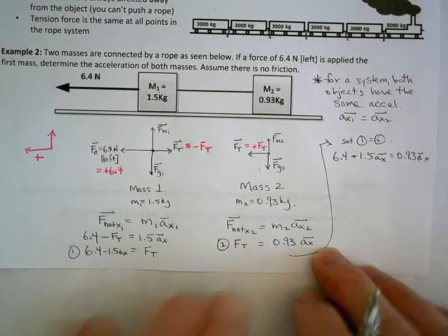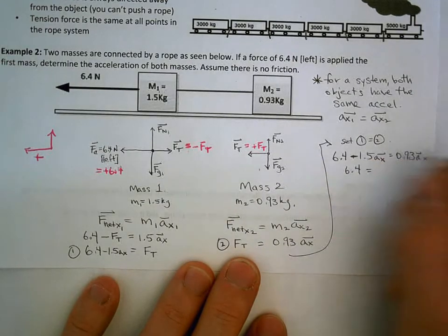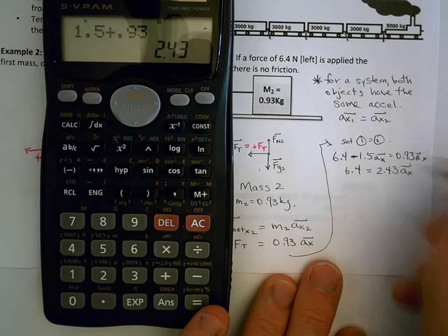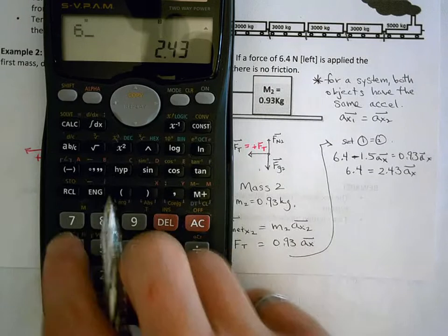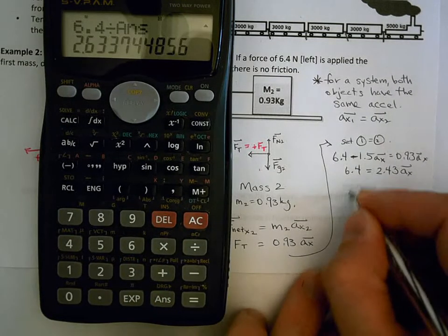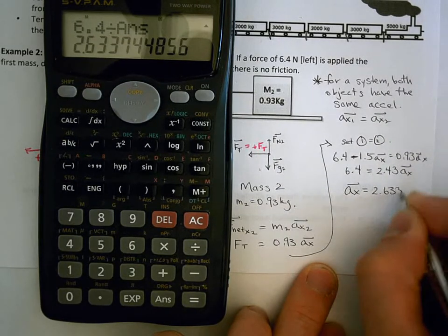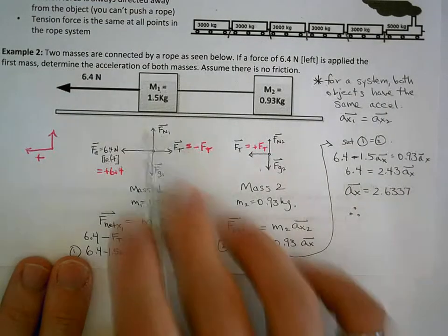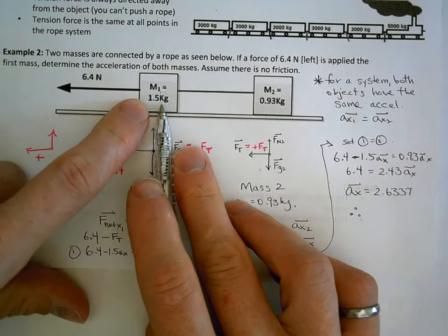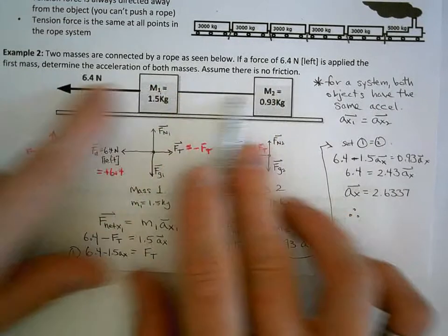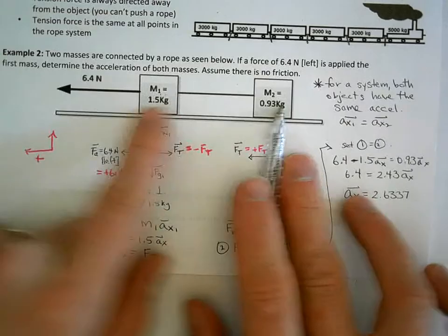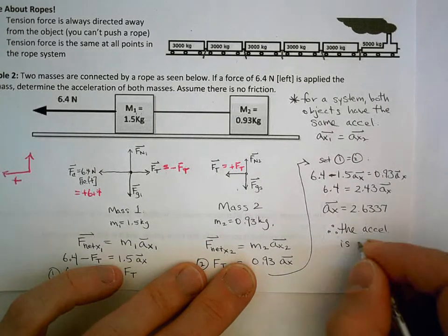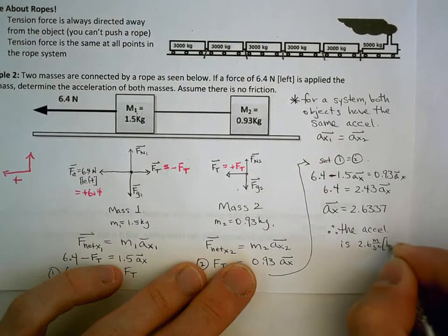Collecting like terms: 6.4 equals 1.5 plus 0.93, giving me 2.43 Ax. Dividing 6.4 by 2.43, I get Ax equals 2.6337. That's the acceleration of both objects — they're both accelerating at the same rate. If you're the one pulling the first block, this block moves and they both move together as a team. The second block slows the first block slightly, but they move together. The acceleration is 2.6 meters per second squared to the left, since it was a positive value.